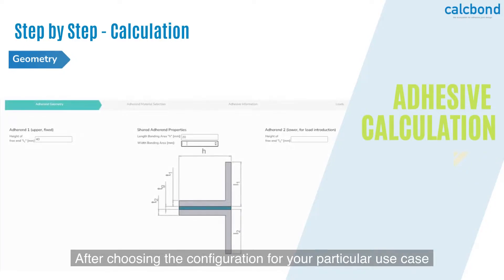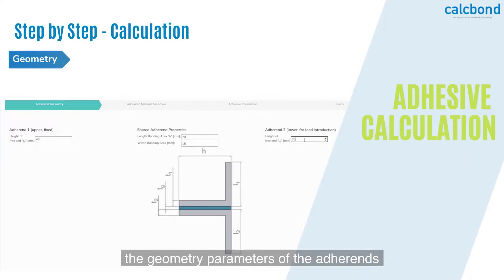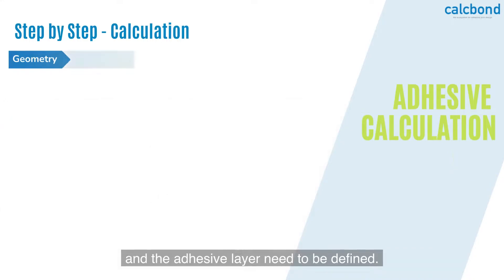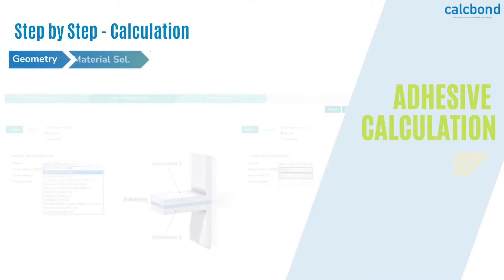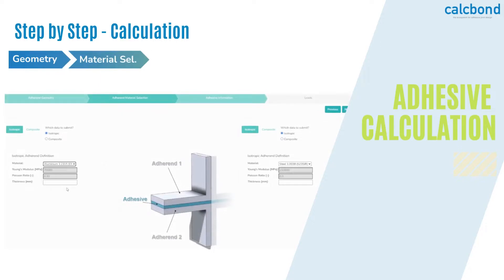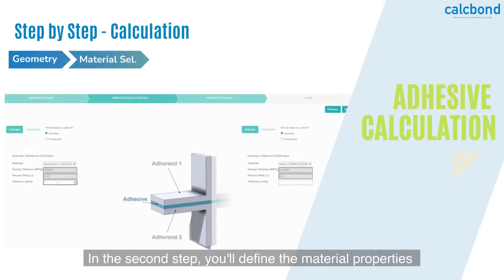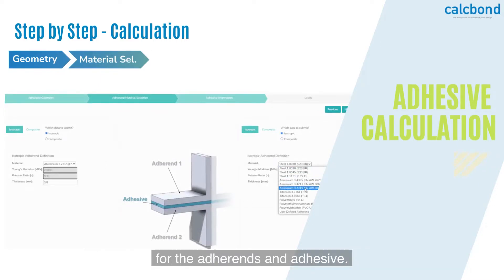After choosing the configuration for your particular use case, the geometry parameters of the adherends and the adhesive layer need to be defined. In the second step, you'll define the material properties for the adherends and adhesive.